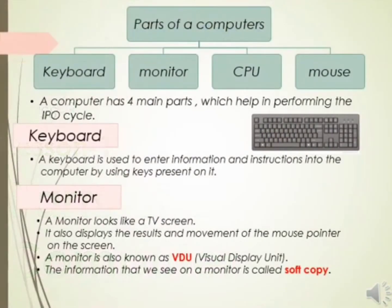A computer has four main parts which help in performing the IPO cycle — that is keyboard, monitor, CPU, and mouse.